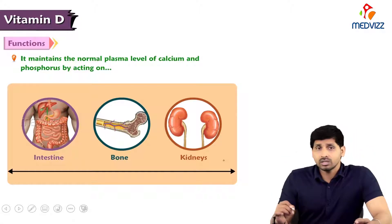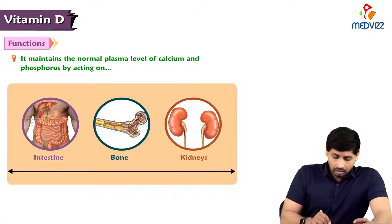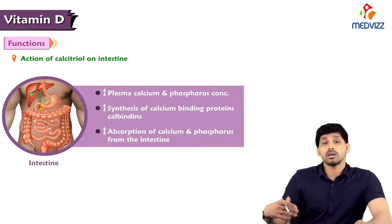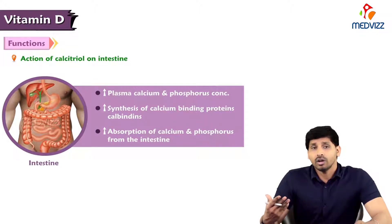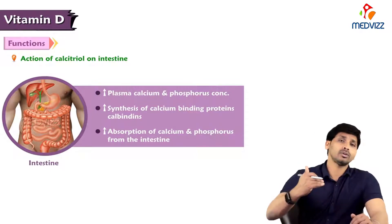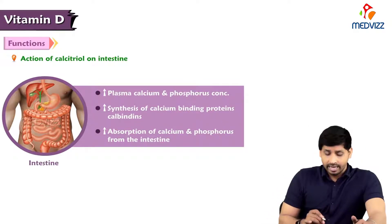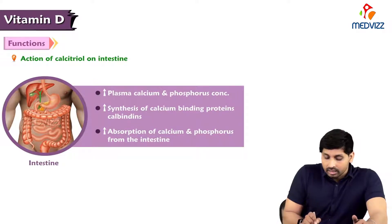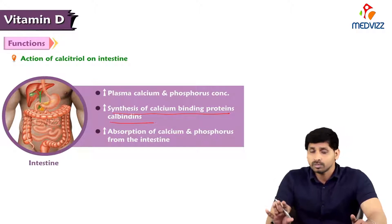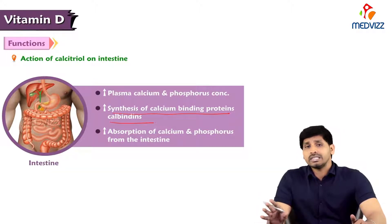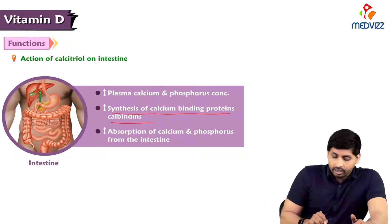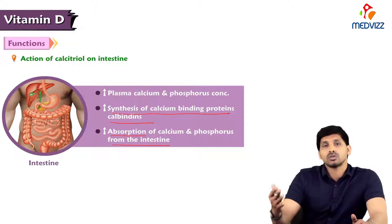Vitamin D works at the intestinal level, on bone, and on the kidney. At the intestinal level, the action of calcitriol increases calcium and phosphorus concentration when blood calcium levels are low. It stimulates the synthesis of calcium binding proteins by acting on intestinal cell DNA to synthesize more mRNA, leading to more calcium uptake. This way it increases absorption of calcium and phosphorus at the intestine and restores calcium levels to normal.